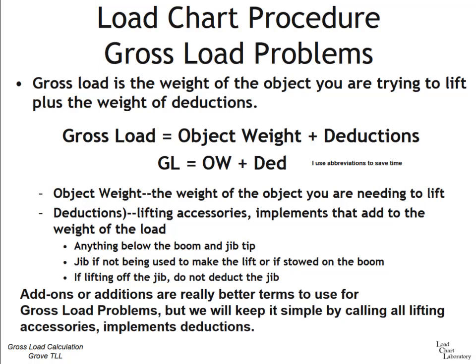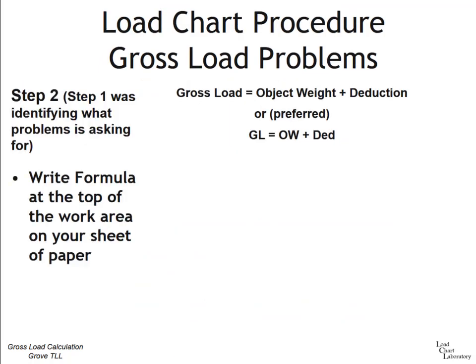Step one was identifying what the problem is asking for. Step two is simply writing out the formula at the top of your work area on your scrap piece of paper. You will be given two sheets of paper — four sides to write on — which you can use as scratch paper for solving your problems. Once you've identified what the question is asking for, write the formula you need to solve that problem.